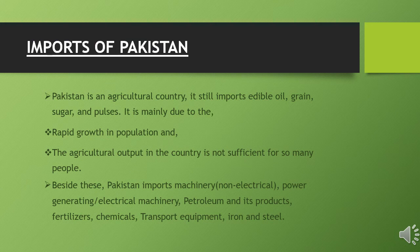Imports of Pakistan: Pakistan is an agricultural country, yet it still imports edible oil, grain, sugar, and pulses. This is mainly due to the rapid growth in population — agricultural output in the country is not sufficient for so many people. Besides these, Pakistan imports machinery (non-electrical and power-generating), electrical machinery, petroleum and its products, fertilizers, chemicals, transport equipment, and iron and steel.